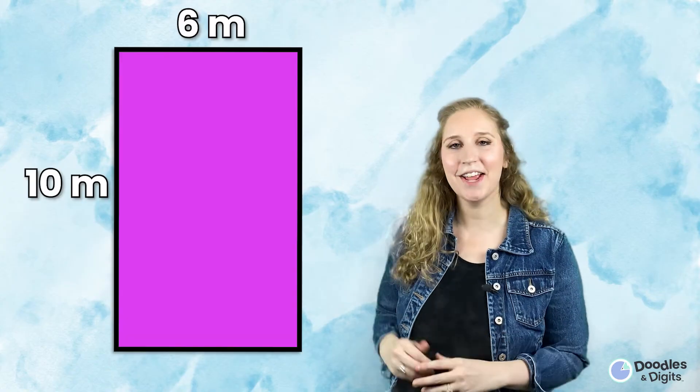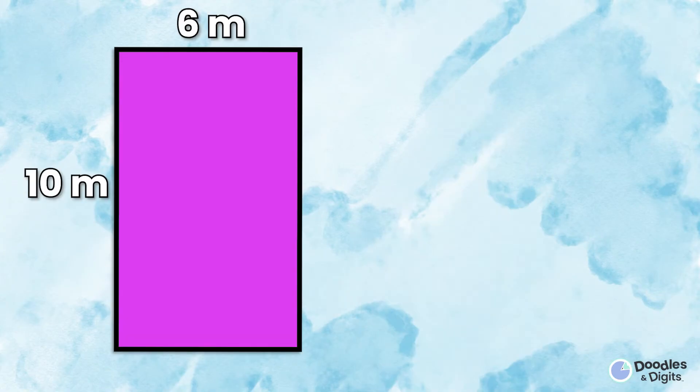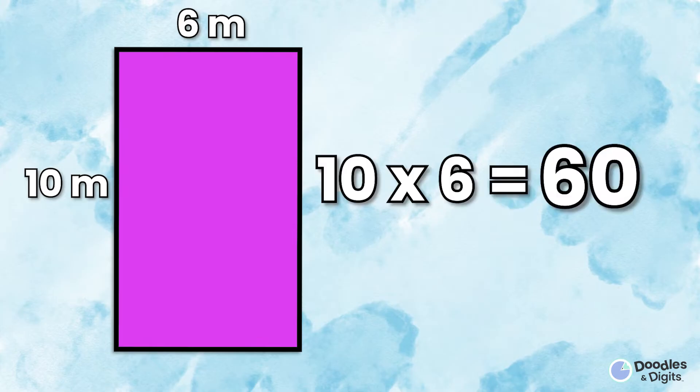All right, let's try a few together. Let's look at this rectangle right here. Remember, the equation is area equals length times width. So we're going to do 10 times 6. 10 times 6 equals 60. We're going to then look at the unit, which is meters. And remember, we have to put a little 2 because it's meters squared.